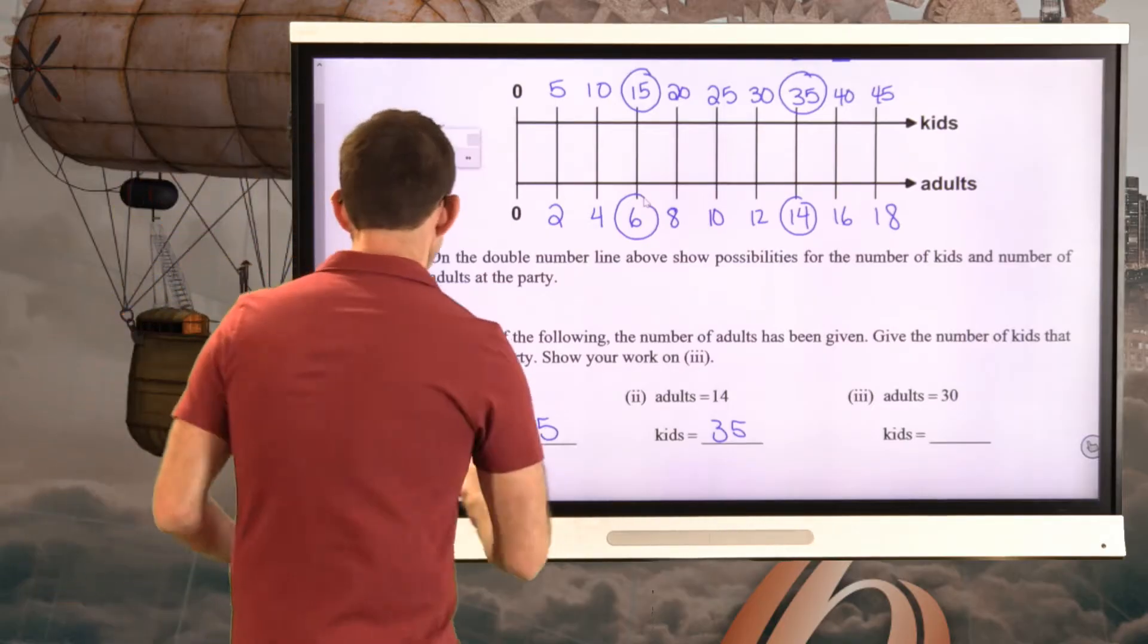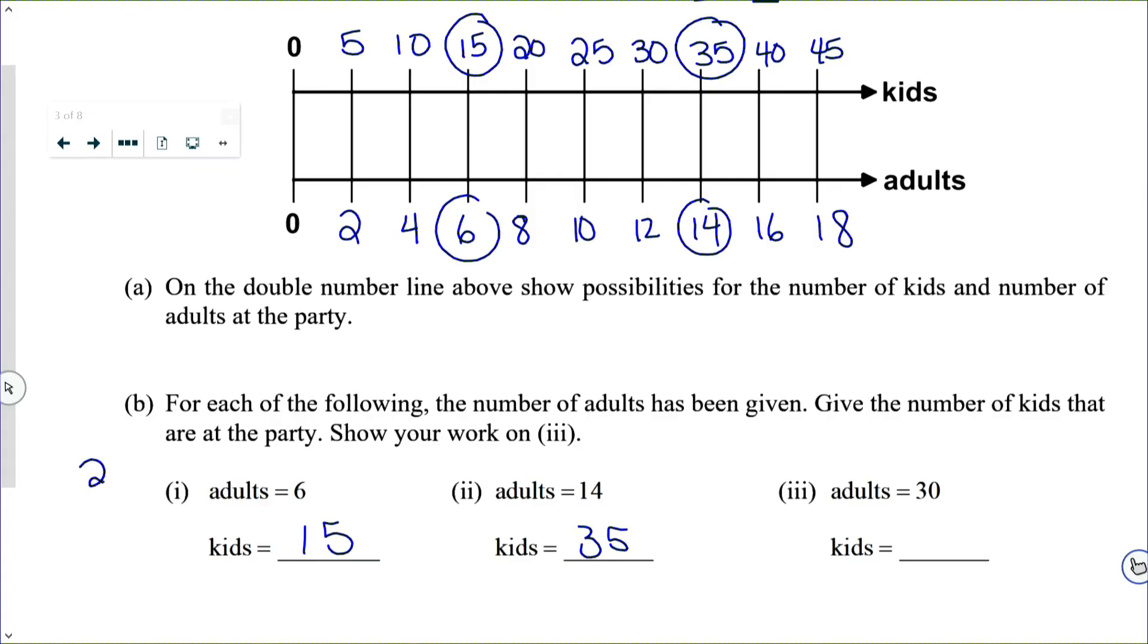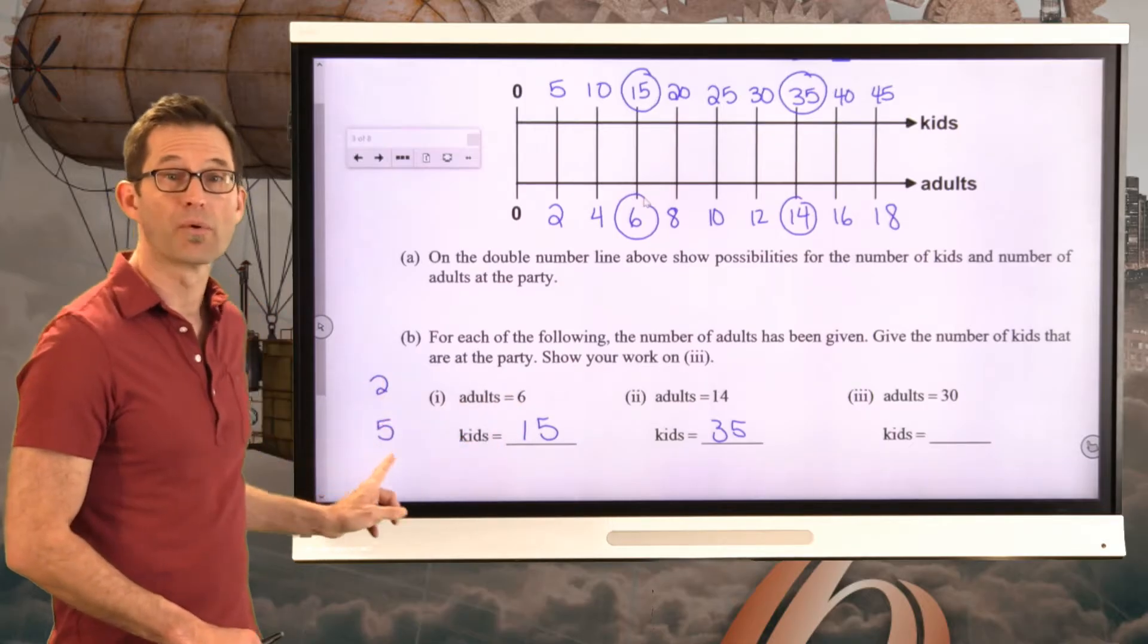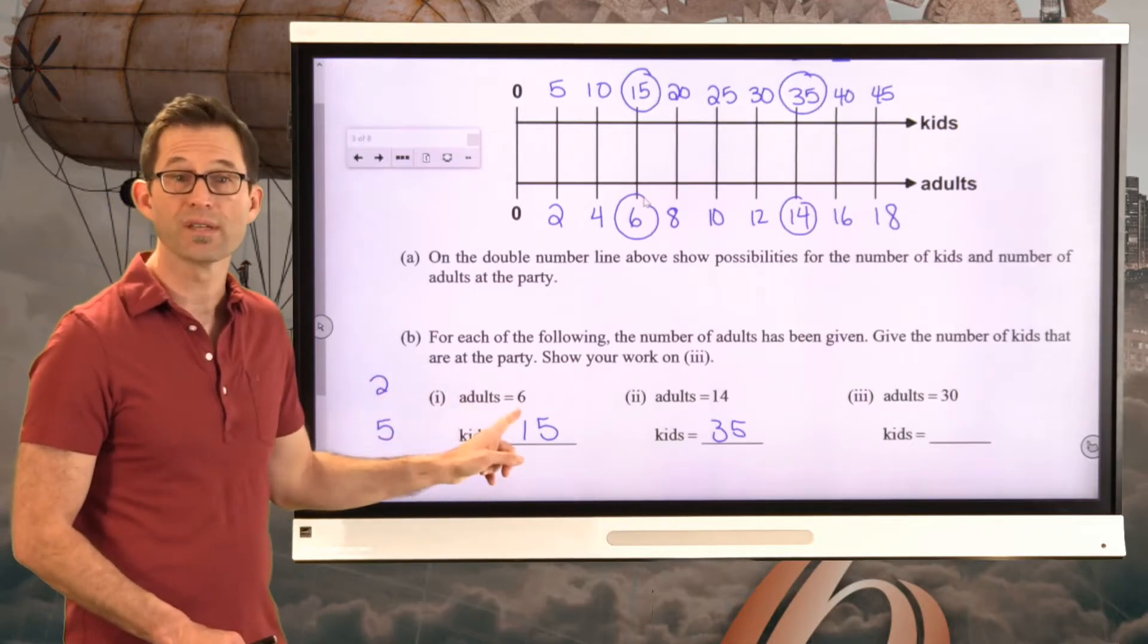Well, keep in mind, the fundamental ratio that we had here was that for every 2 adults, there were 5 kids. So how do we really get to this one? Well, we multiply both of those numbers by 3. 2 times 3 is 6. 5 times 3 is 15.